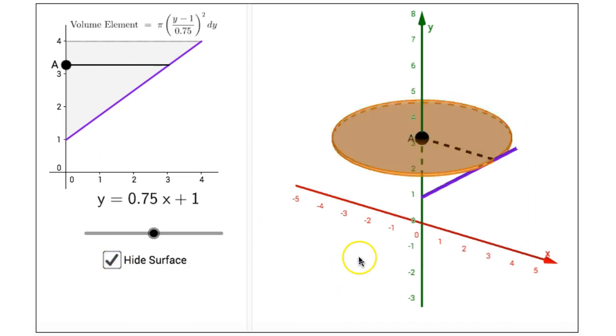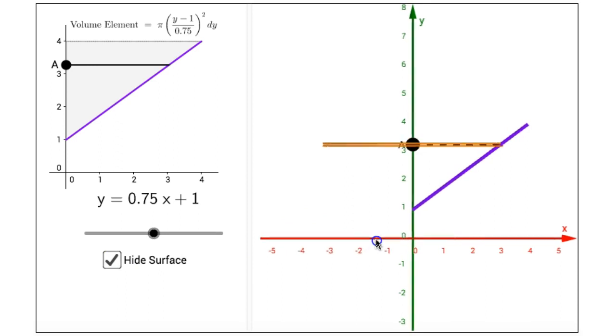Clicking on the hide surface checkbox, we can clearly see the volume element and the volume element is displayed in the upper left corner of the interactive figure.